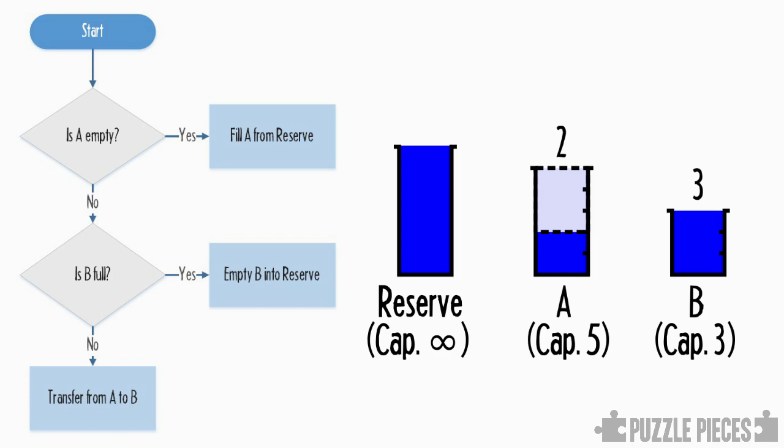OK, A is not empty again, but B is now full. So, what we'll do is we'll empty out B. Now, I've put empty into the reserve here, but as the reserve has infinite capacity, it's just like tipping it out on the ground, for example. It has the same effect.